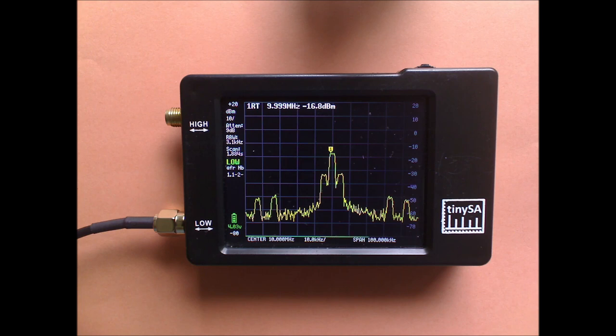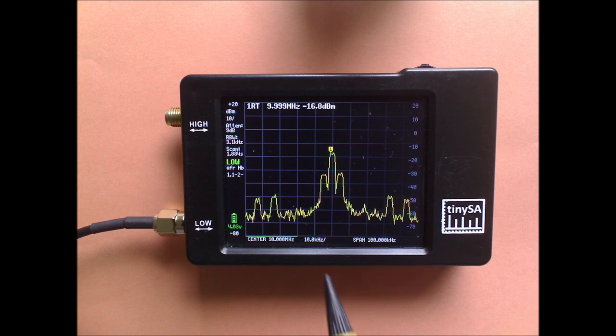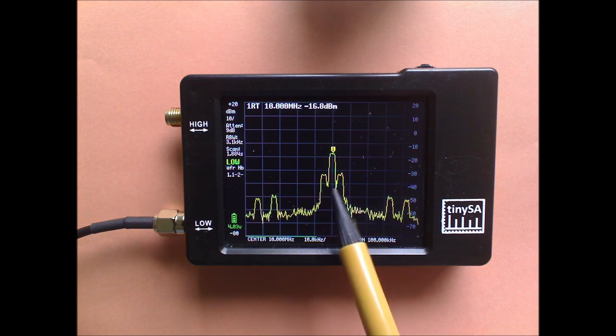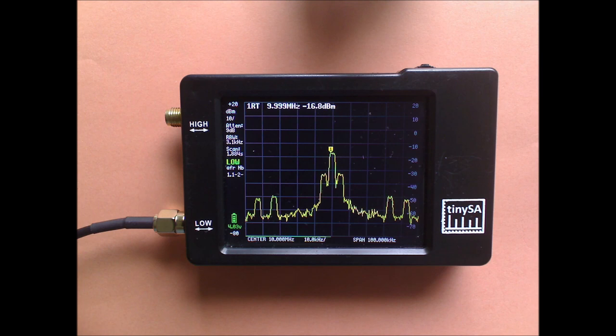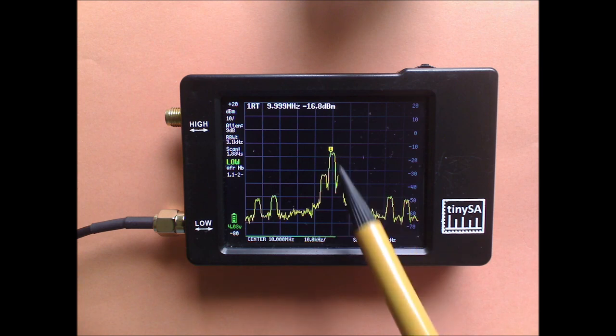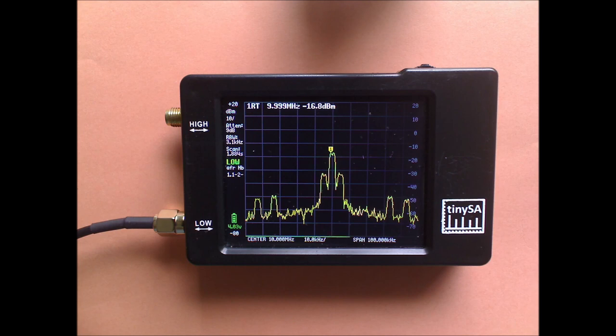It is also possible to read the modulation frequency directly from the display. The center here is at 10 MHz, the carrier. And because we have 10 kHz per division, you can see the sidebands are in the middle of the division. So they are 5 kHz away from the carrier. So the modulation frequency is 5 kHz.